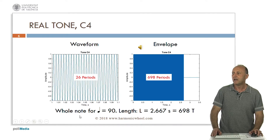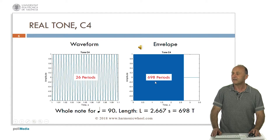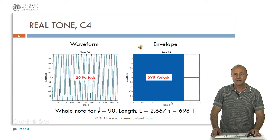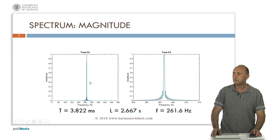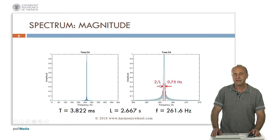For example, this is a whole note for quarter note equal to 90 BPM; the length is 2.667 seconds. We have represented them here. But because there are near 700 periods we cannot appreciate the waveform, but only the maximum and minimum values. This is called the envelope. In this case the spectrum is not a very thin line, but something like this. The width of the main part of the line is 2 divided by the length, which is 0.75 Hertz.